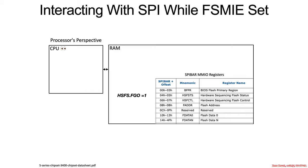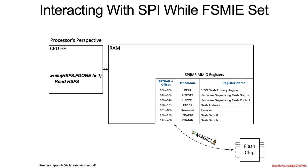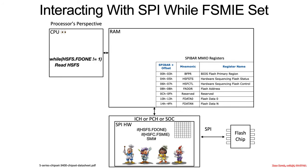The CPU initiates a flash transaction, and while the magic happens, the CPU continues polling the hardware sequencing flash status register to check if it's done yet. Meanwhile, the PCH checks whether the hardware sequencing flash done bit and the HSFC FSMIE bit are both set — if so, when the transaction completes, it fires a System Management Interrupt.